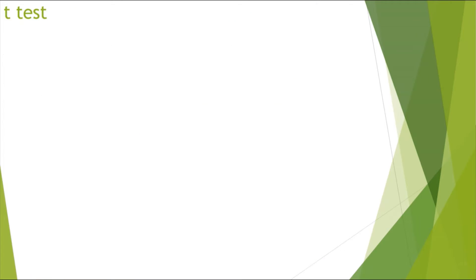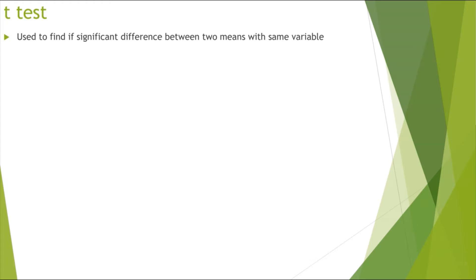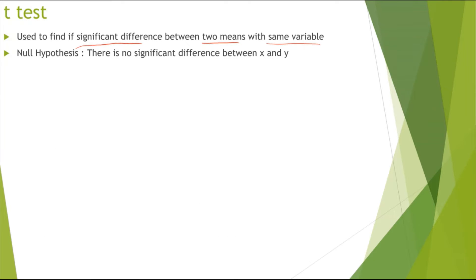Now looking at the t-test. The t-test is used to find if there is a significant difference between two means with the same variable. The key thing is that we're looking between two different groups of data, so the null hypothesis would be that there is no significant difference between X and Y.